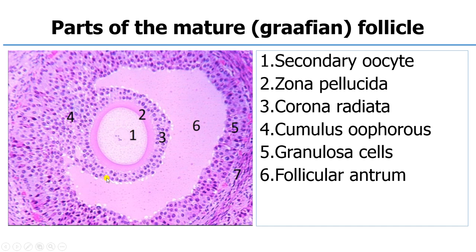Then you have the follicular antrum, which is very important in the concept of ovulation, because it contains follicular fluid. Follicular fluid is maximally produced at ovulation. At ovulation, there is a surge of luteinizing hormone that causes an increase in production of follicular fluid called the liquor folliculi. It is this increase in intrafollicular pressure that pushes the secondary oocyte out of the ovary and into the fallopian tube, completing the process of ovulation.